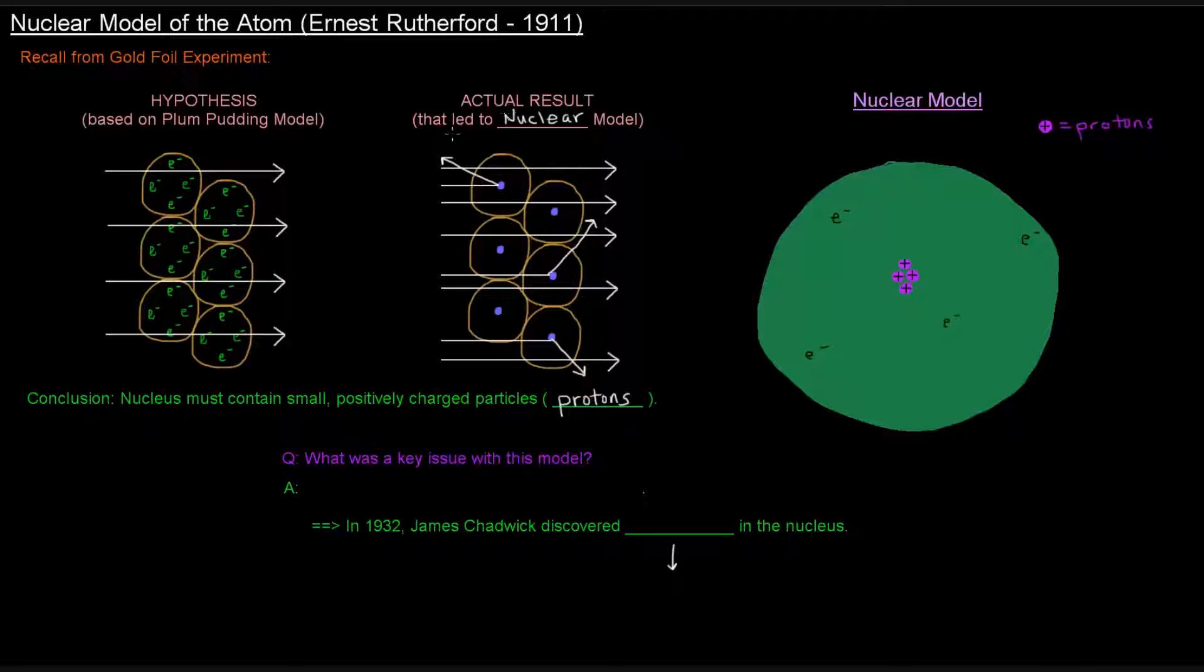But in the actual result that led to what this video is about, the nuclear model, there was reasoning that there was a tiny dense nucleus that contained small positively charged particles that he called protons which caused these deflections.